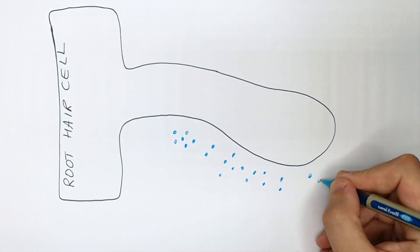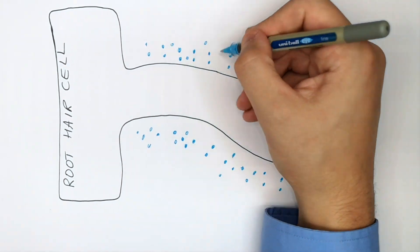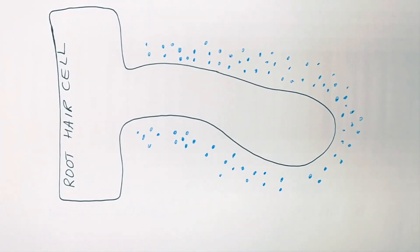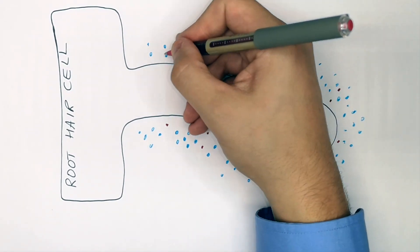This is a root hair cell. There is more water in the outside of the root hair cell in the soil than on the inside of the root hair cell. However, mineral ions, there is less mineral ions outside the cell than on the inside where there are more.